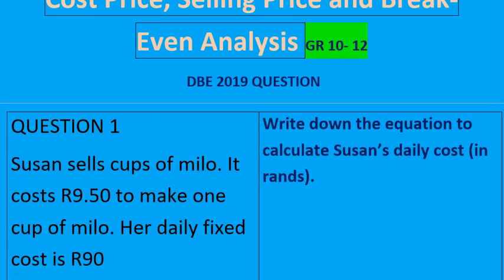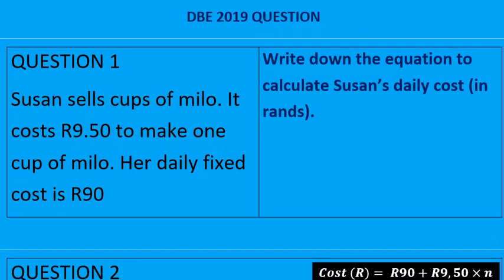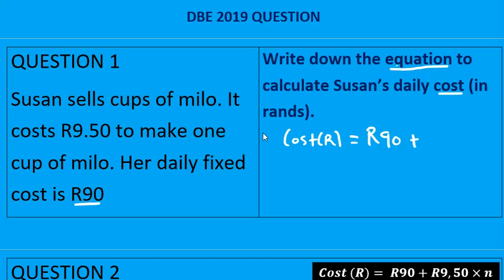Question one: Susan sells cups of Milo. It costs R9.50 to make one cup of Milo and her daily fixed cost is R90. We need to write the equation for Susan's daily cost. You always start with the fixed cost, which is 90, plus 9.50 times n, where n represents the number of cups of Milo.